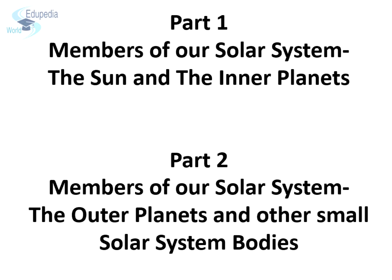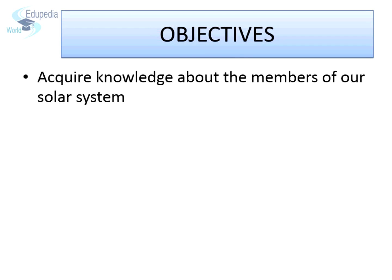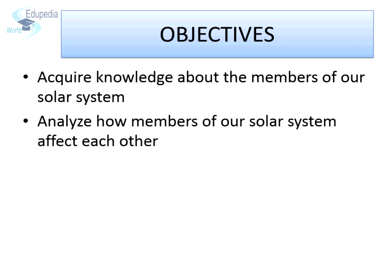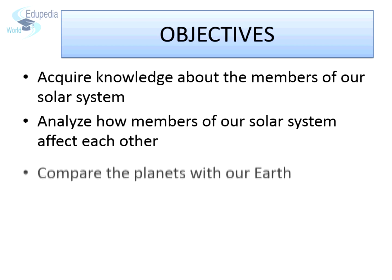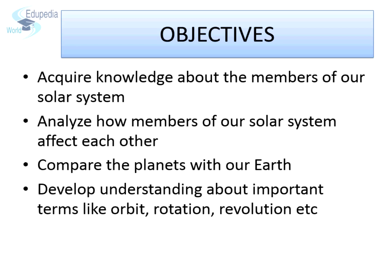In these two parts of this topic, we are going to try and achieve the following objectives: acquire knowledge about the members of our solar system; analyze how members of our solar system affect each other; compare the planets with our Earth; and develop understanding about important terms like orbit, rotation, revolution, etc.